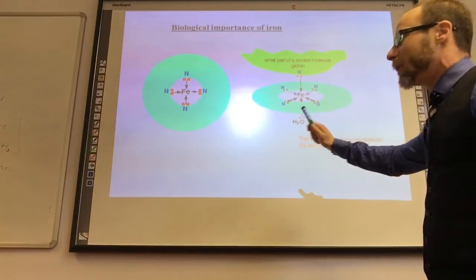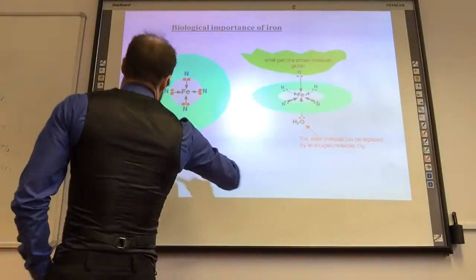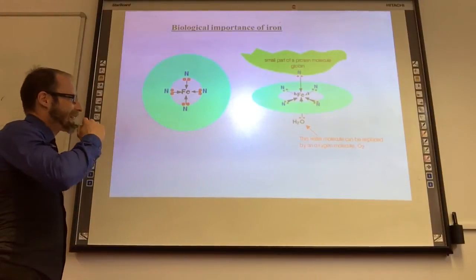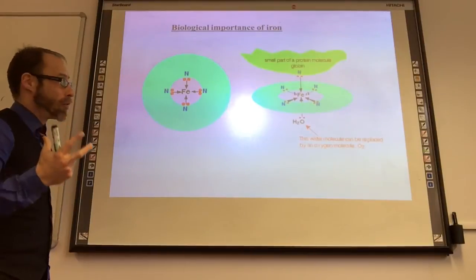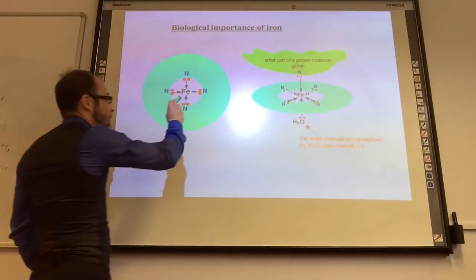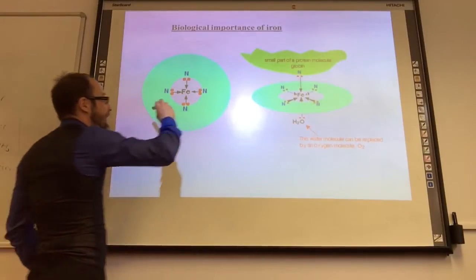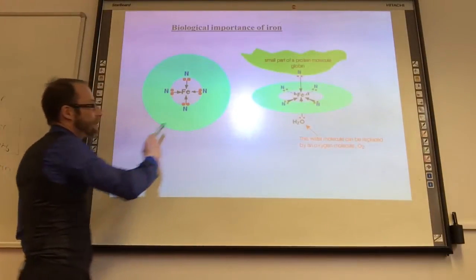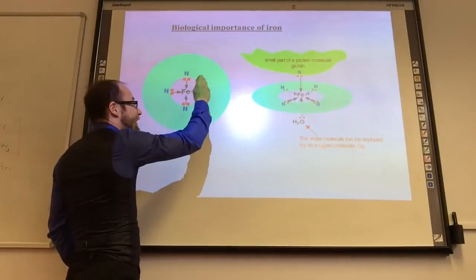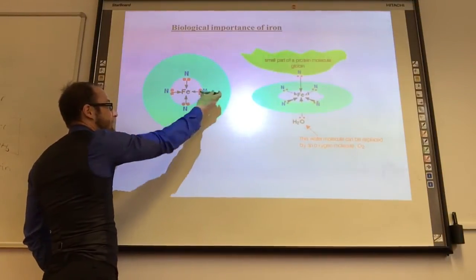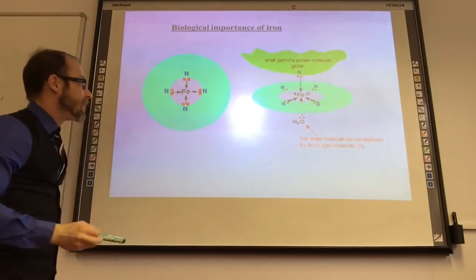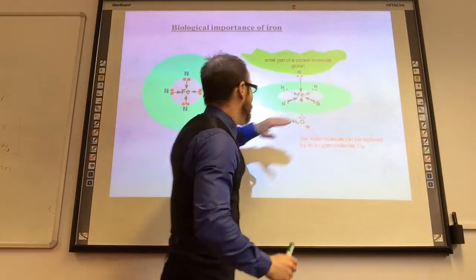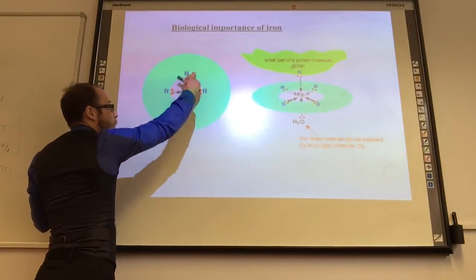We're going to look at why iron is so important. We all know we need to have iron in our diet, and that's because we have iron in our haemoglobin molecules. Haemoglobin is a very, very complicated protein, but what we're interested in is the active part, which is where the iron ion is. This circle here represents all the biology stuff. What we're interested in is that there are four nitrogen atoms bonded by dative covalent bonds to the iron ion. The whole thing is an octahedral complex, but that part is in the plane. So we have got the iron with four dative covalent bonds.